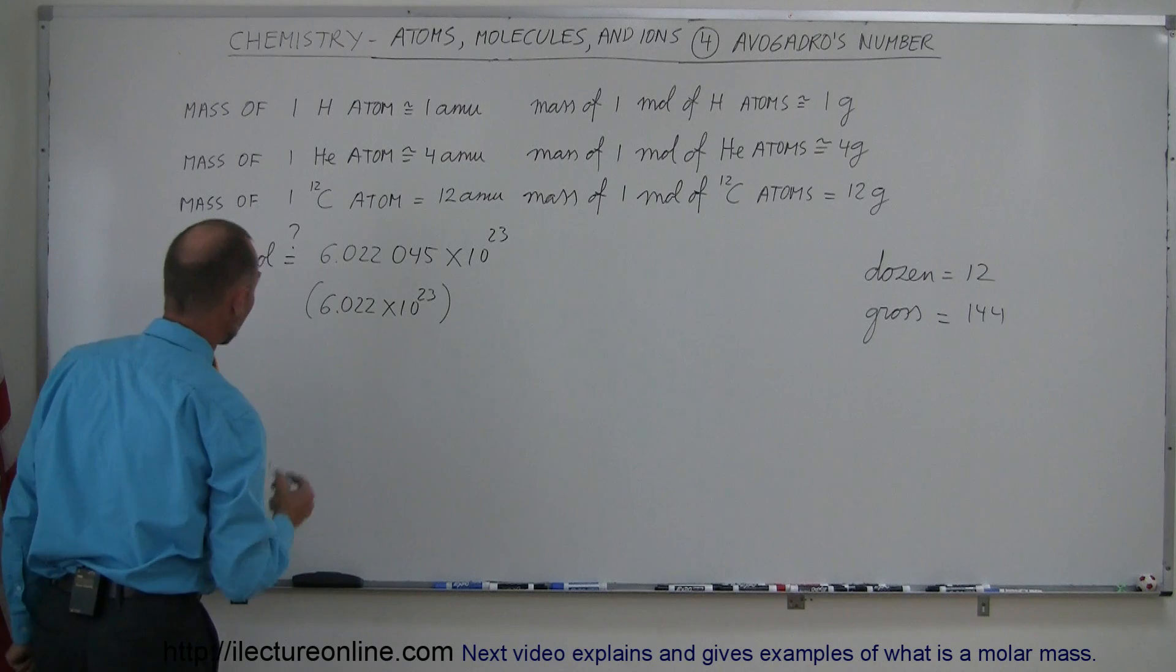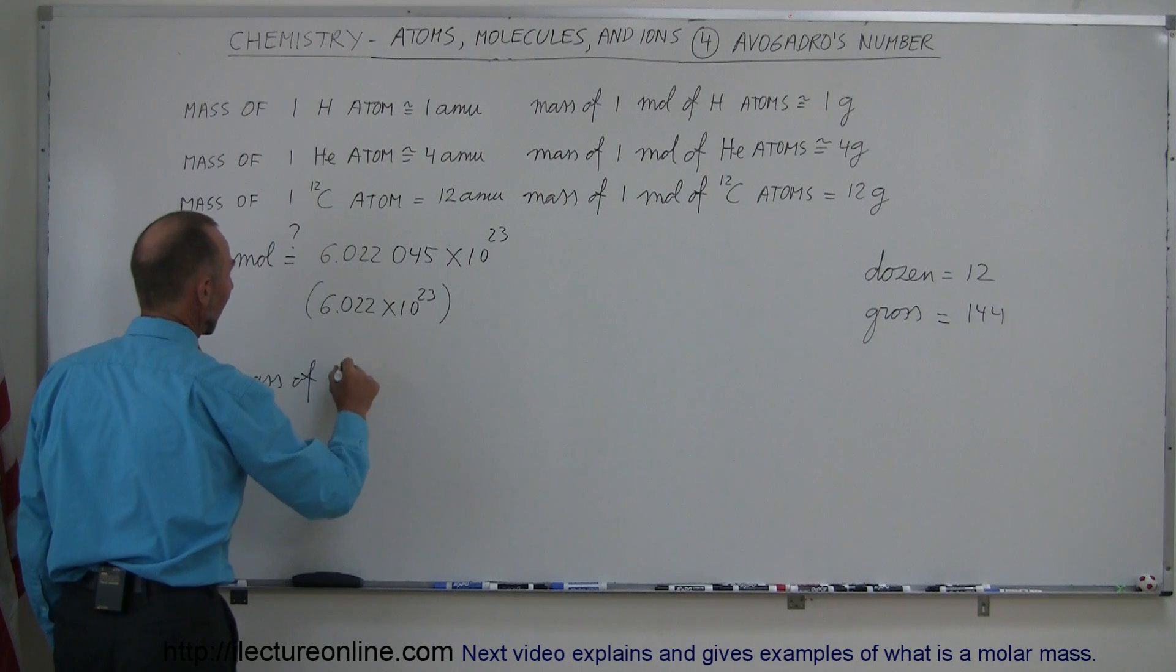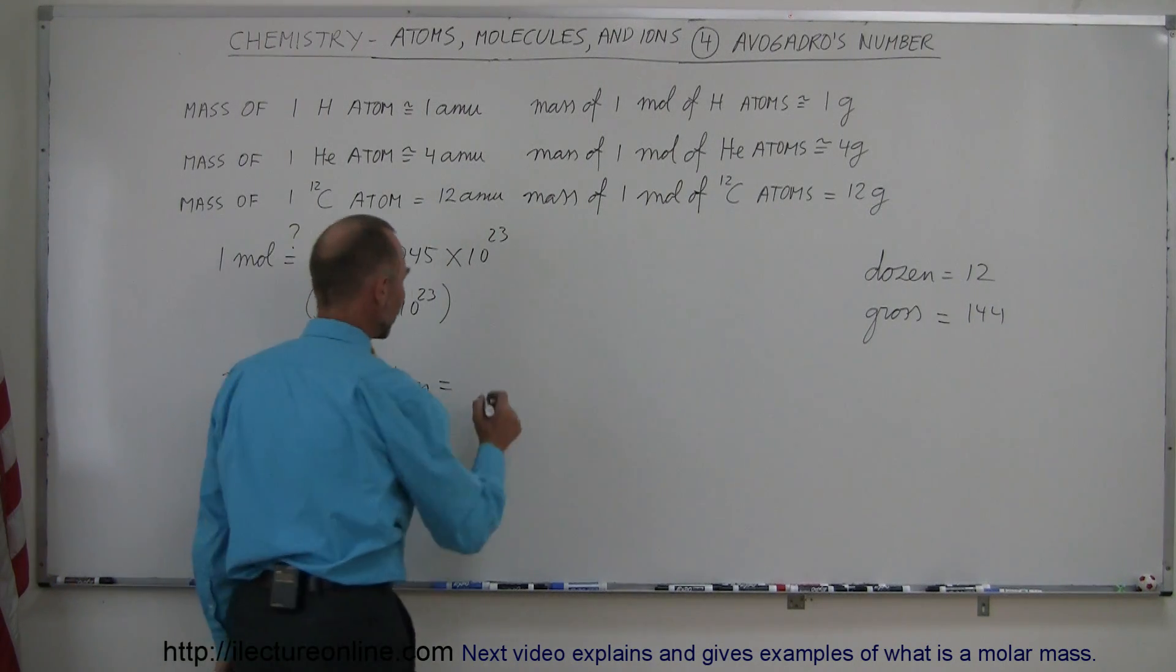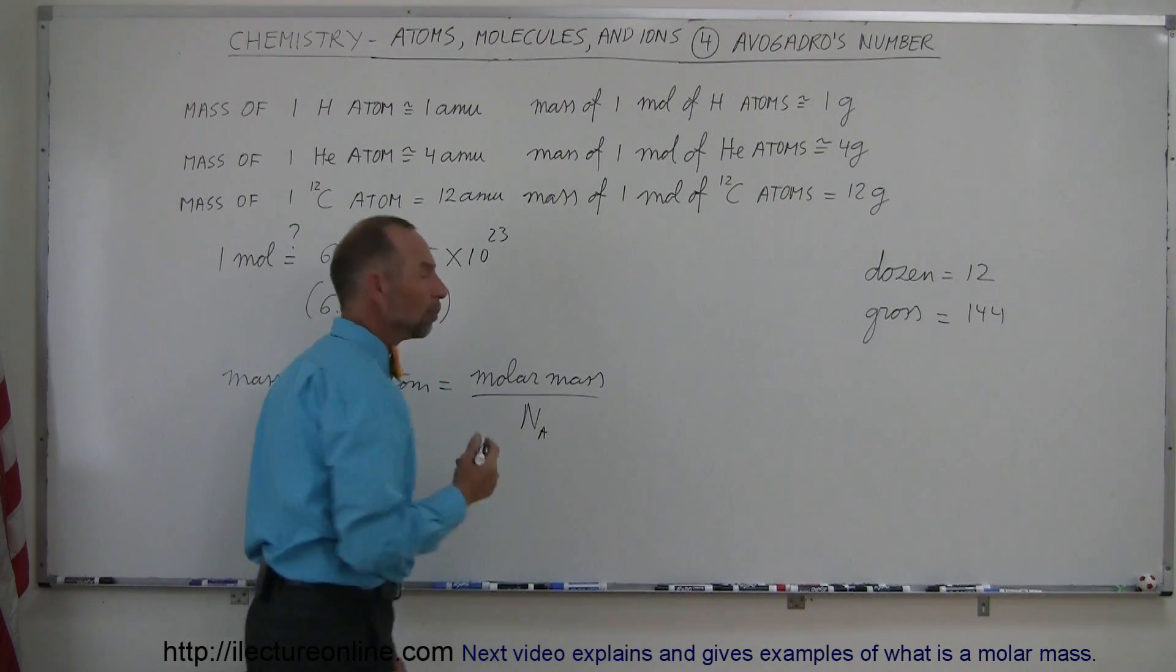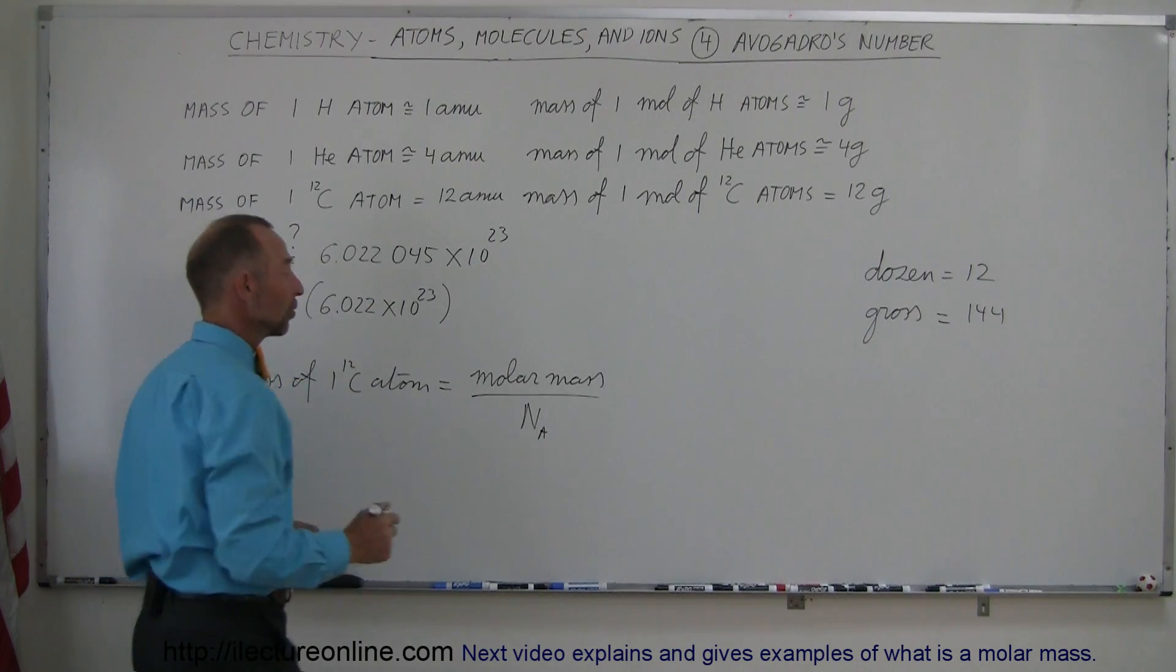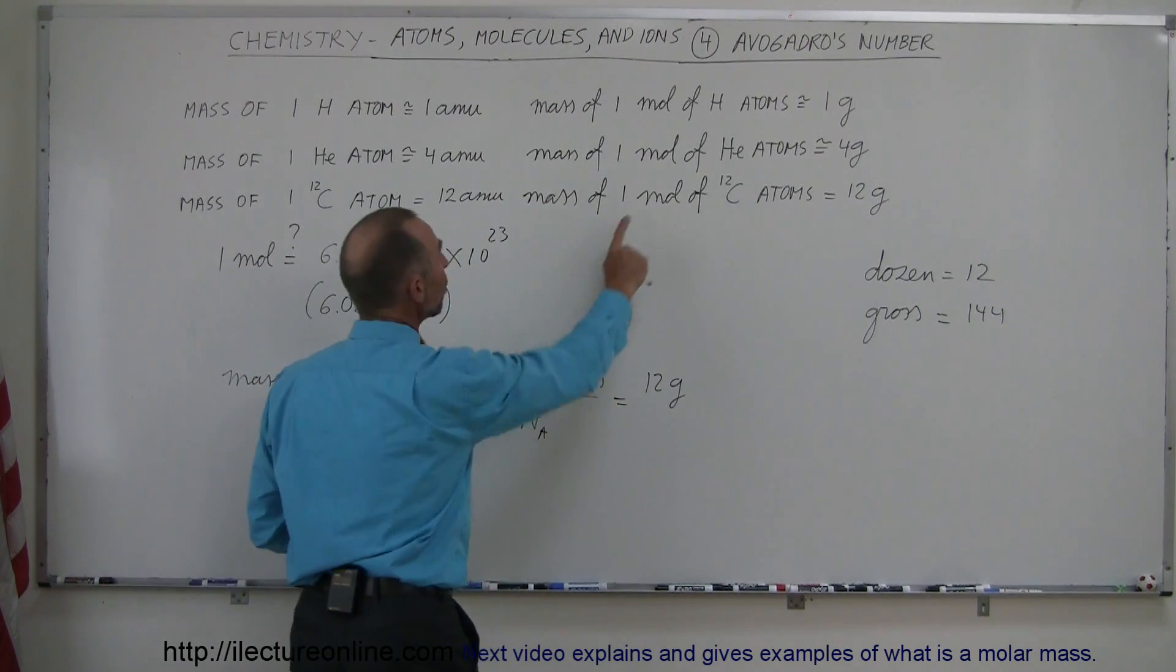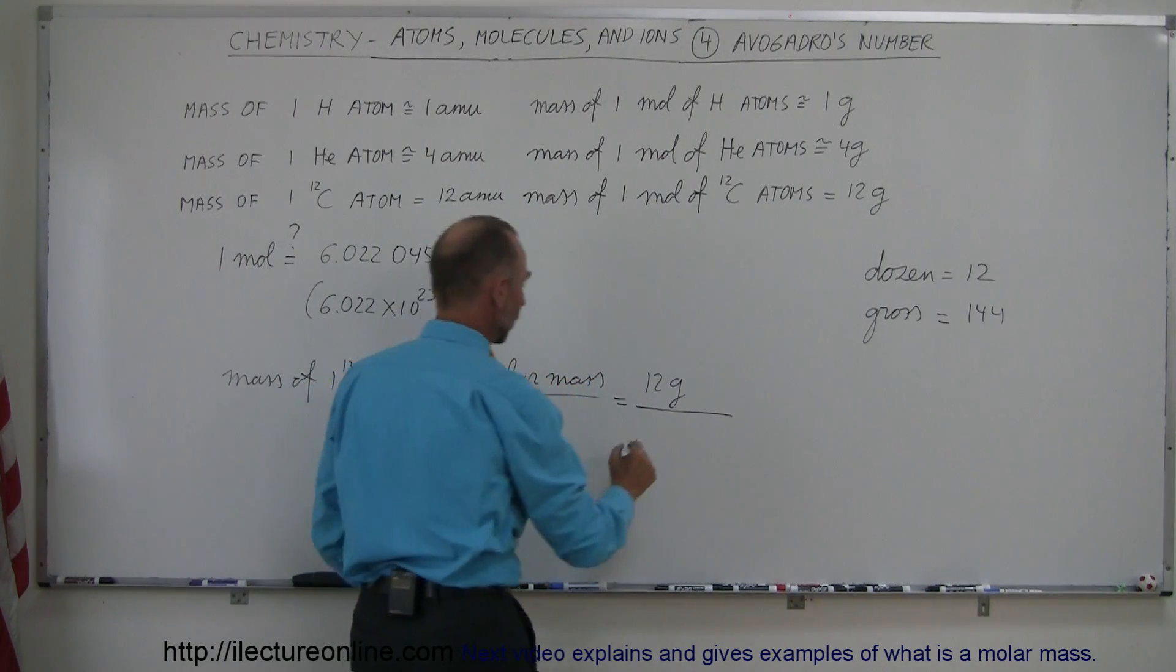Now, how we can also use that number is, for example, if you want to know the mass of one carbon atom, that is equal to the mass of a mole of atoms, that is equal to the molar mass divided by Avogadro's number. And now the molar mass means the mass of a mole. A mole is Avogadro's number of those atoms. So this is equal to 12 grams, because we know that one mole of carbon atoms has a mass of 12 grams. Divide that by Avogadro's number,